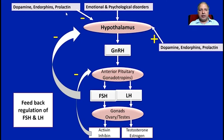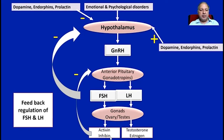Various factors like dopamine, endorphins, prolactin, and emotional and psychological factors ultimately feed back onto the hypothalamus. If the need is there, the hypothalamus causes the release of GnRH, which acts on anterior pituitary gonadotropin cells to cause release of FSH and LH. These reach the gonads — ovaries in females and testes in males — causing production of activin and inhibin, primarily inhibins A and B. Inhibins cause feedback inhibition both at the level of the anterior pituitary and the hypothalamus, regulating FSH and LH. Sex hormones testosterone and estrogen are also produced.